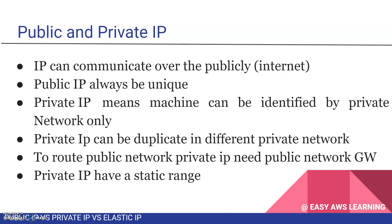Private IP can be duplicated across different networks. The private IP ranges are defined — for example, the 10.0.0.0/8 network. These three private network ranges are officially defined. This is the distinction between public IP and private IP.